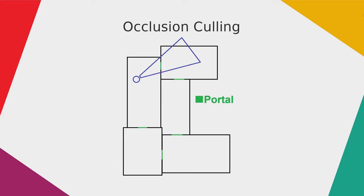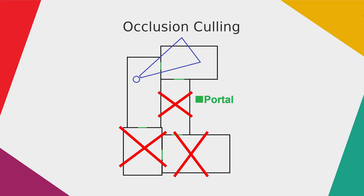Then it checks if your cell has portals connecting it to other cells. If yes, it checks if one of those portals is inside or cut by your view frustum. If so, the cell connected via that portal is also considered for rendering. This continues recursively for each connected cell. After this process, only the relevant cells are considered for rendering, and all other cells and their objects are excluded — making the rendering process much faster and performance much higher.